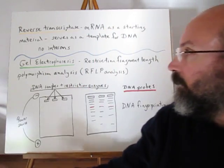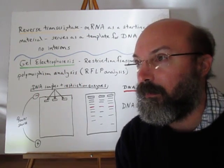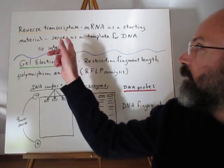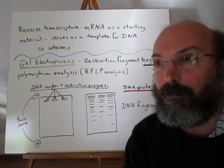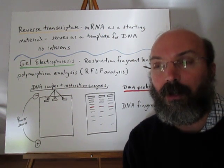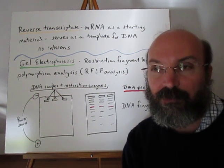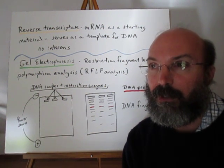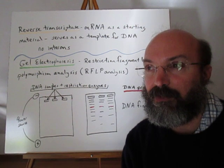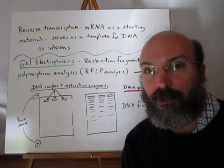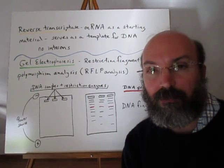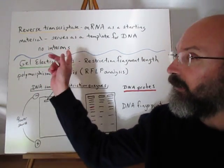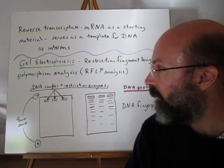Another way to get your gene of interest is by using reverse transcriptase. Reverse transcriptase is an enzyme that allows us to start out with RNA — the messenger RNA for that particular gene. The benefit is that the messenger RNA, when it's created, has removed all the introns or nonsense portions of the DNA. So that can also be utilized to have that gene of interest for cloning.